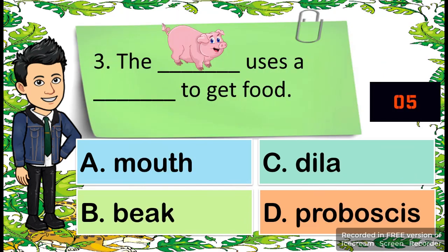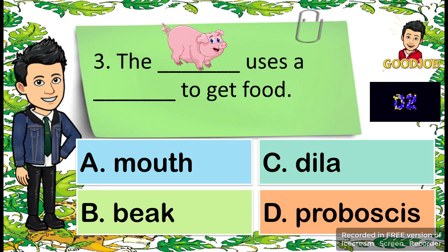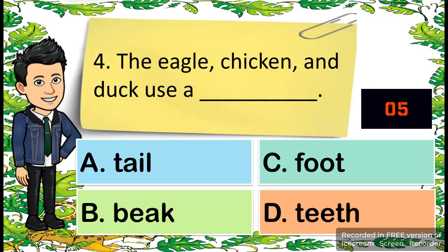Number three: the blank uses a blank to get food. A, mouth. B, beak. C, tongue. D, proboscis. Number four: the eagle, chicken, and duck use a blank. A, tail. B, beak. C, foot. D, tip.